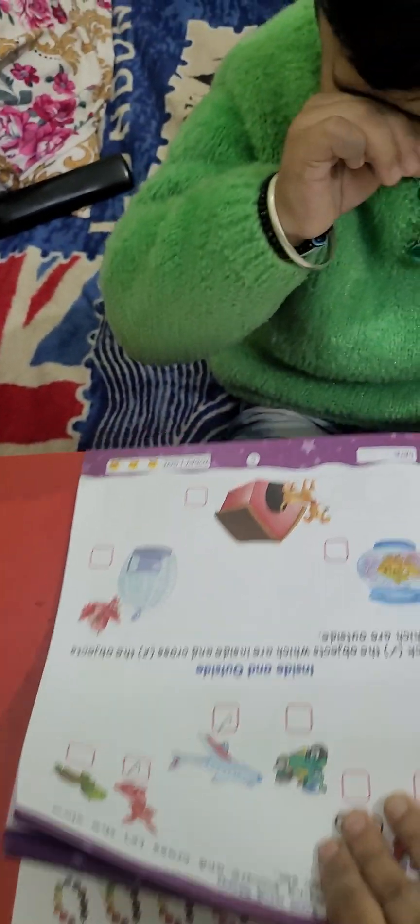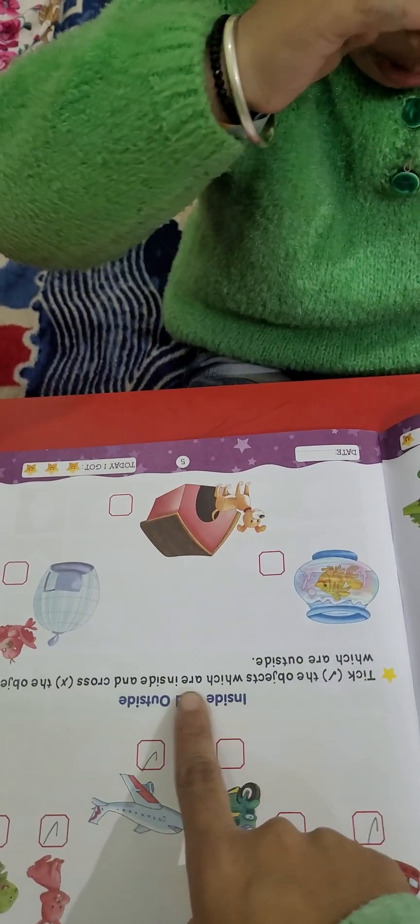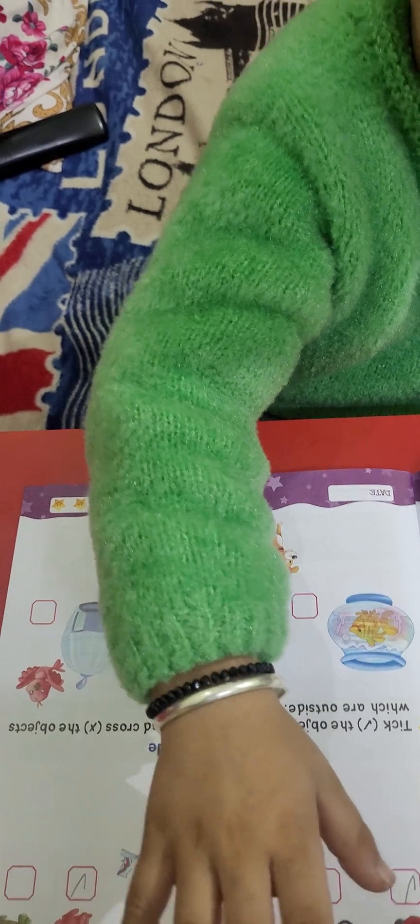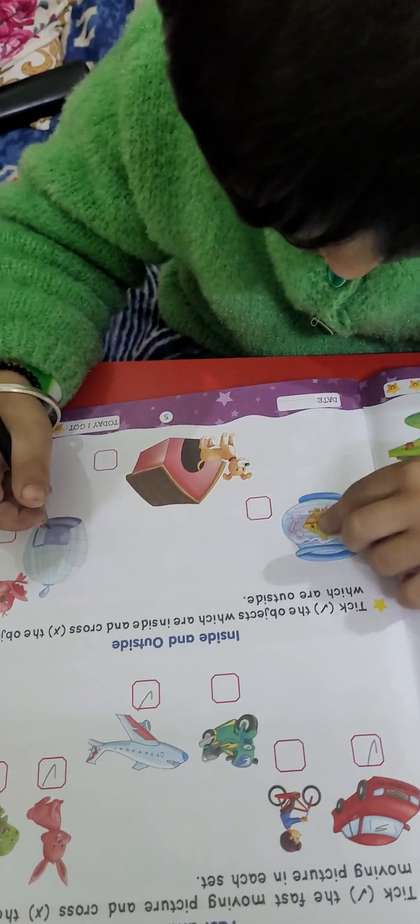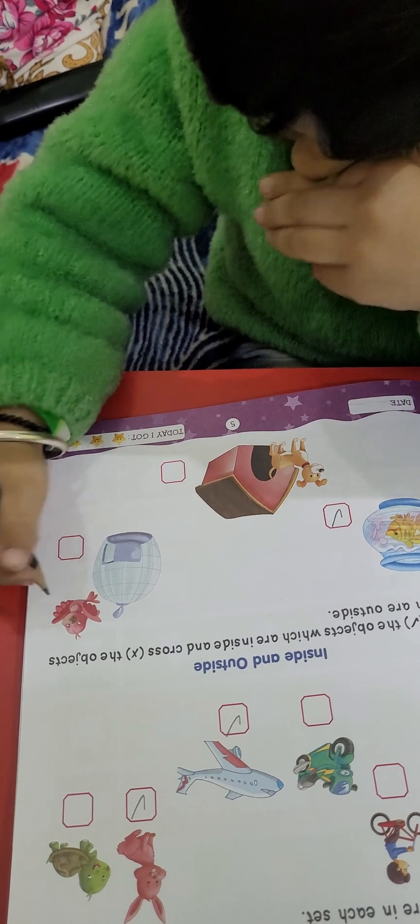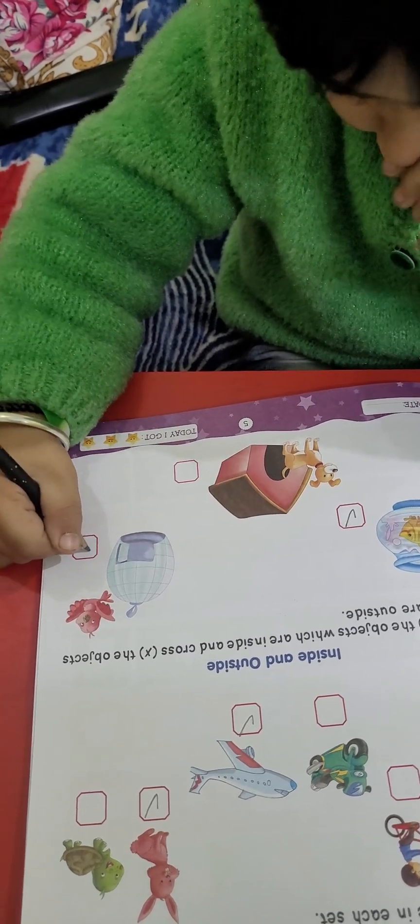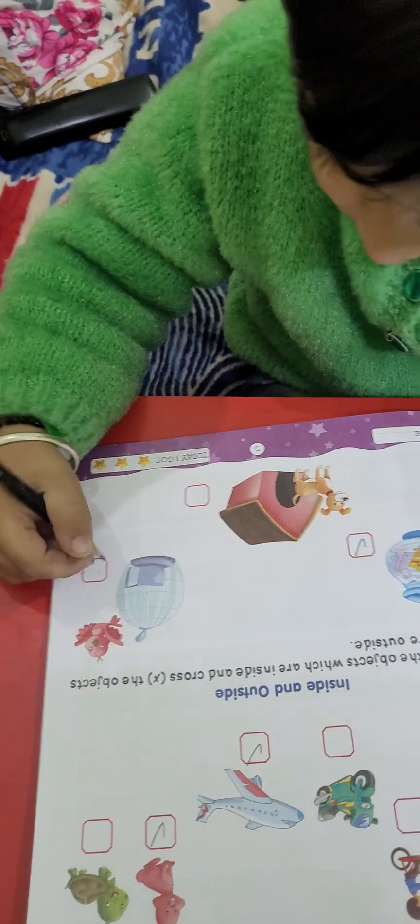Now, come on the next one. Tick the objects which are inside and cross the objects which are outside. Inside, which is inside? Check. Which is inside? Okay. Tick. And who is inside? Is it inside? No. Then you have to cross it.